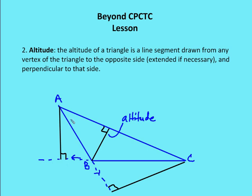So the altitude is a line segment drawn from any vertex — A, B, or C — to the opposite side, extended if necessary, and perpendicular to that side. This means it forms a right angle with the opposite side or its extension.